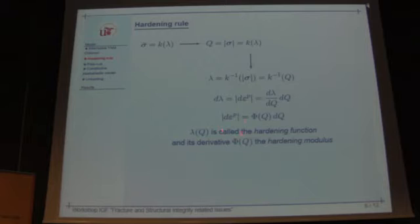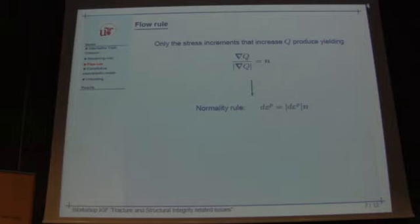So we have that relation between the increment of this parameter Q, which is the distance in the stress space, and the plastic strain increment. This function is called the hardening function, and it can be also easily obtained from a simple uniaxial cyclic tensile test.